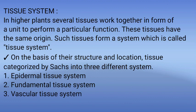In higher plants, several tissues work together in the form of a unit to perform a particular special function. These tissues have the same origin. Such tissues form a system which is called a tissue system. On the basis of their structure and location, tissue systems are categorized into three different types by the scientist Sachs.